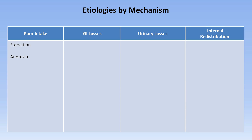Poor intake requires the least discussion, aside from noting that the kidneys are usually able to resorb nearly 100% of filtered potassium. Therefore, intake must be profoundly reduced for hypokalemia to develop in the absence of another etiology. GI losses can be from above or below. Also consider surreptitious laxative abuse as a form of bulimia. A rare but predictable cause is ureterosigmoidostomy, where the ureters are surgically implanted into the sigmoid colon — this results in increased sodium delivery to the colon, where it is reabsorbed in exchange for potassium.